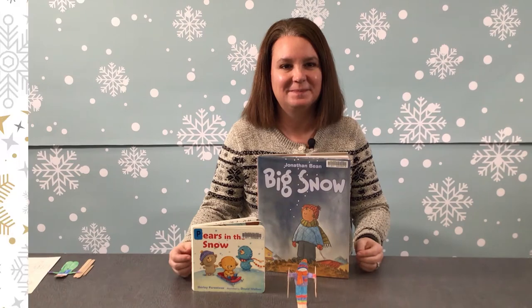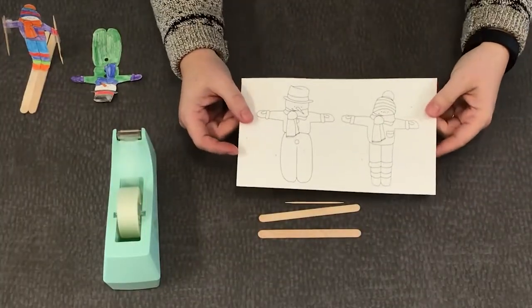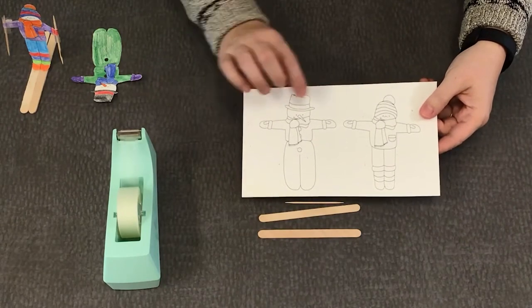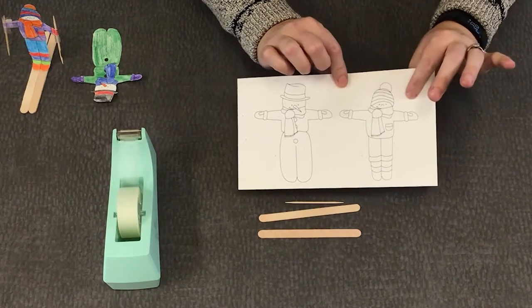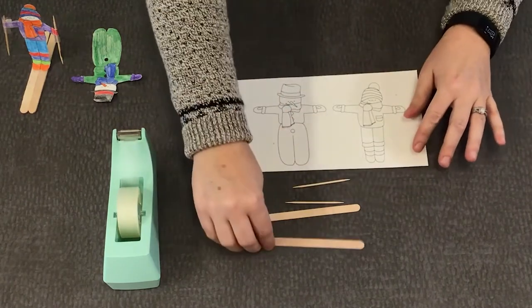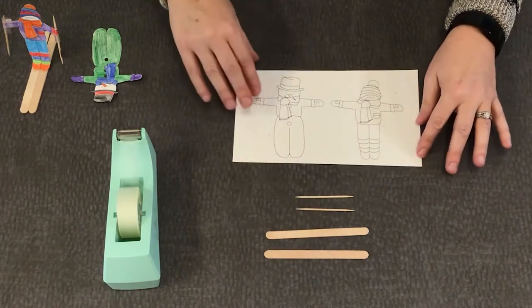To get started, in your craft kit you have the snowman and the other skier, and you can make this one either a boy or girl. You have two craft sticks and two toothpicks. First thing that you need to do is to color your skiers.